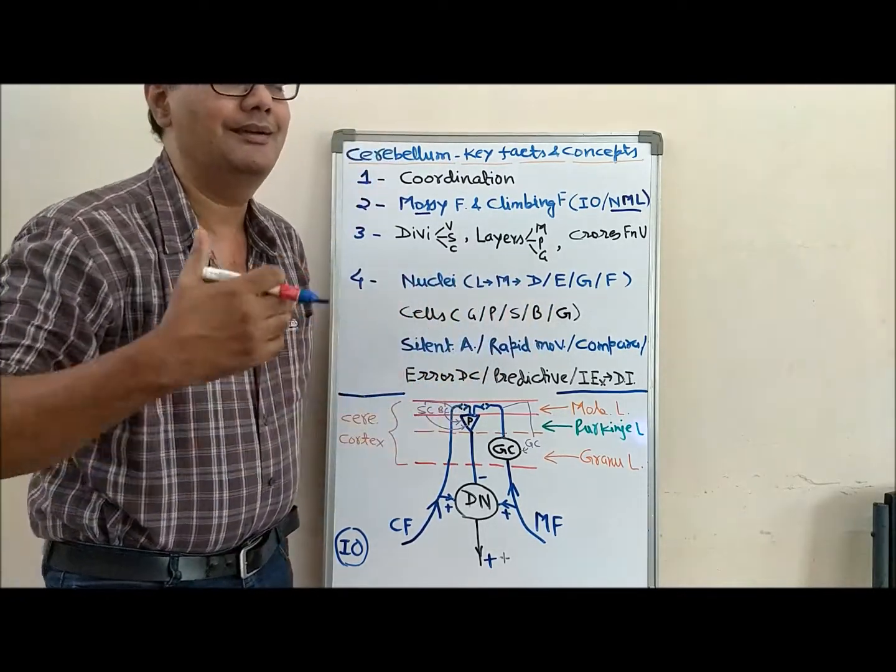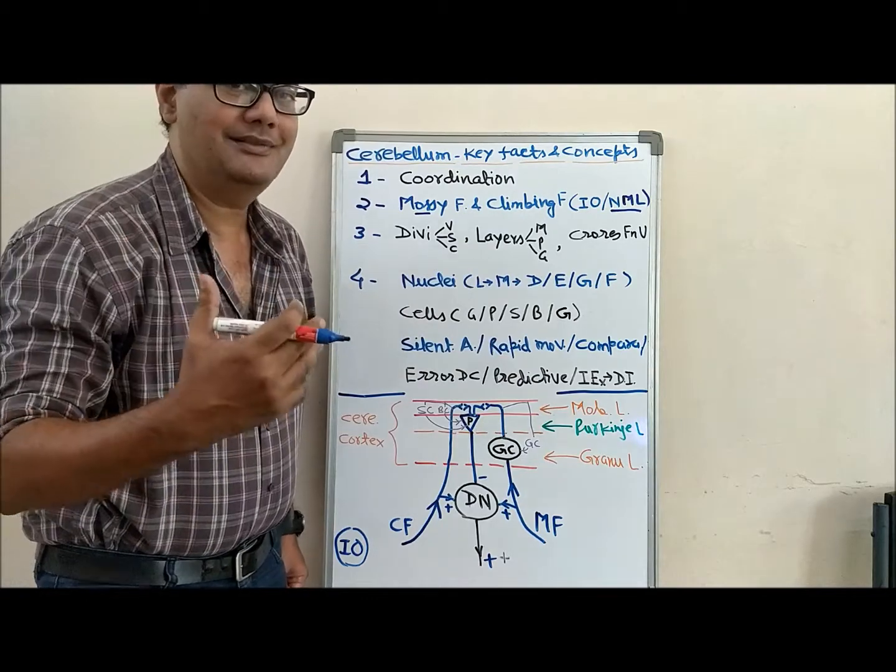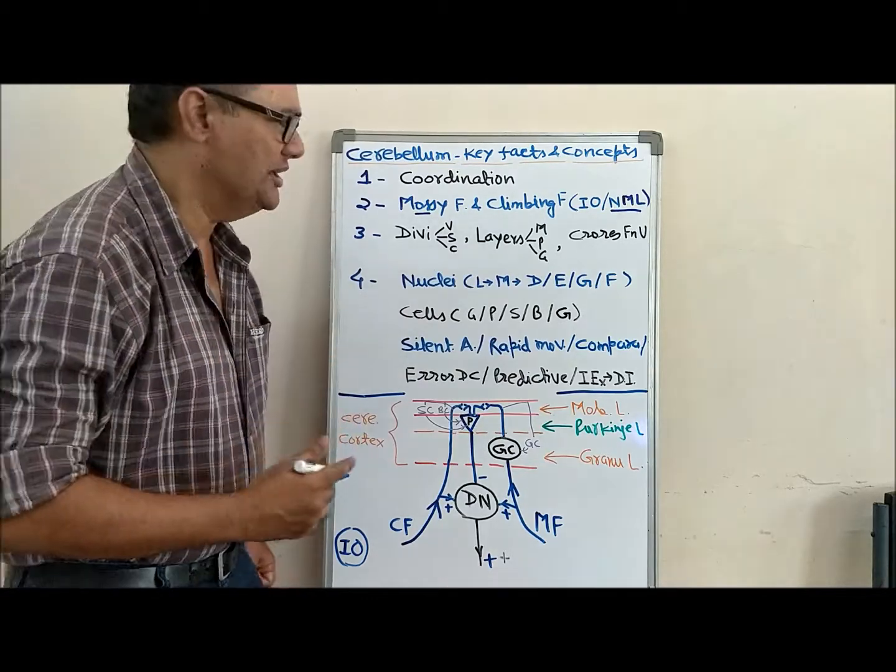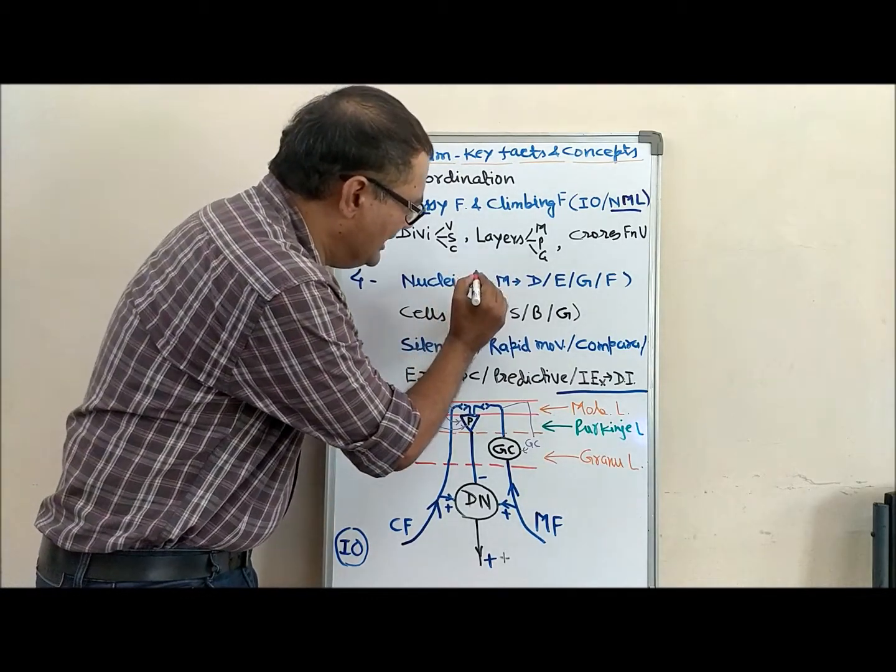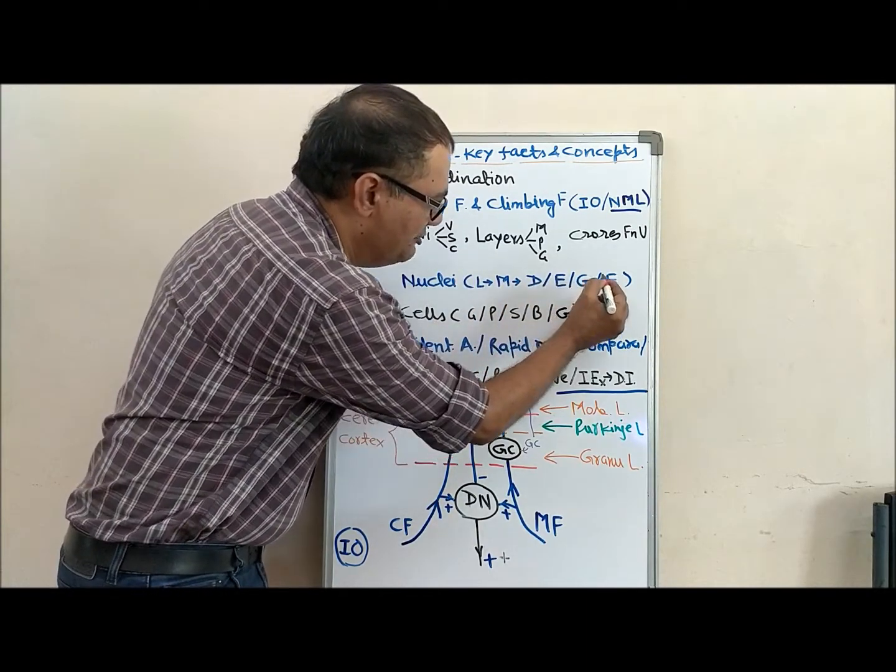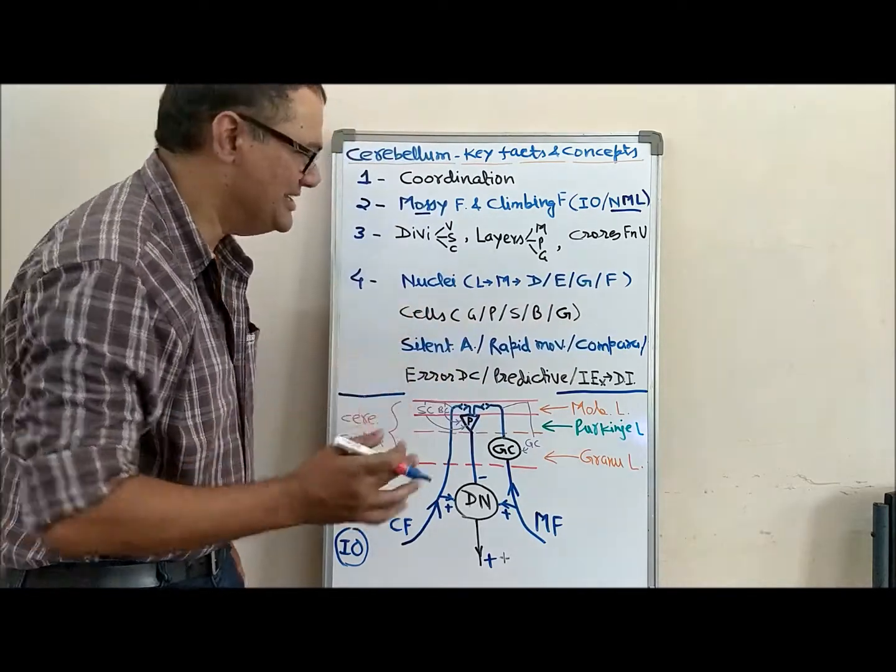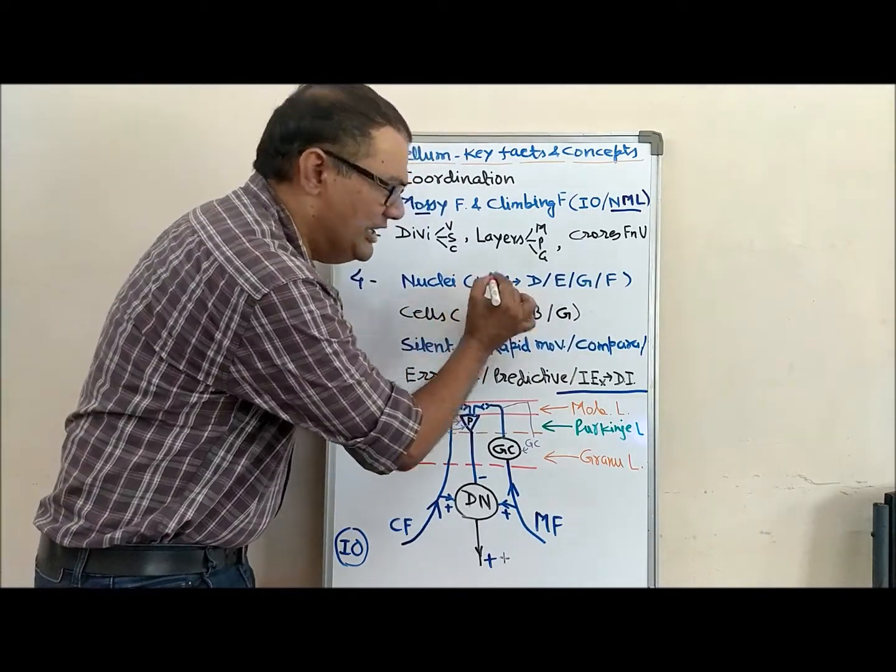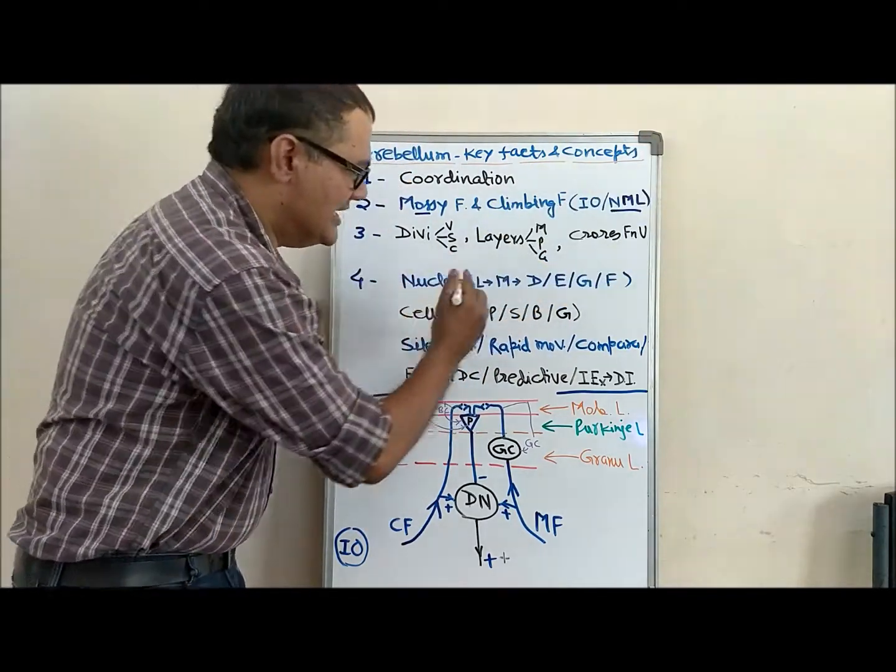We can remember these nuclei using a mnemonic: from late evening to midnight, doctors eat good food. Taking from this, from lateral to medial in cerebellum, deep nuclei are dentate, emboliform, globose, and fastigial.